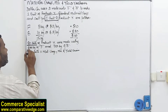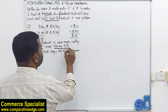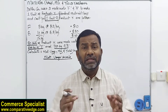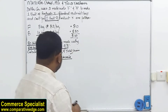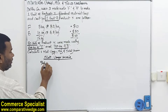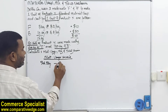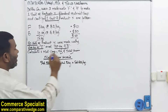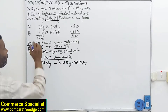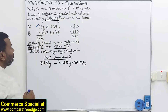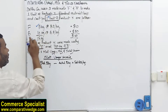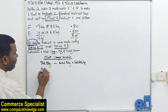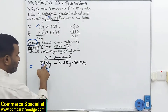We ended up using 600 kg of material F and 700 kg of material B, and we are asked to calculate material usage, mix, and yield variances. The formula for material usage variance is: (standard quantity minus actual quantity) multiplied by standard rate per kilogram. For material F, one unit requires 5 kg, so for 80 units the standard quantity is 5 × 80 = 400 kg.